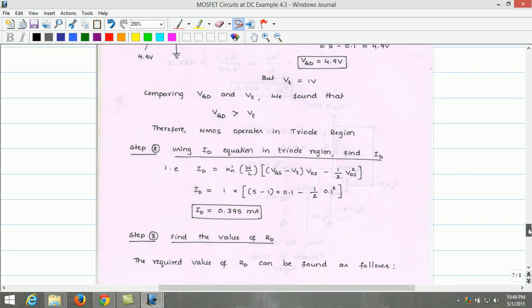In next step, we will use triode current equation to find the drain current value. The drain current expression in triode region is given by ID equals KN dash W by L into VGS minus VT times VDS minus half of VDS square.